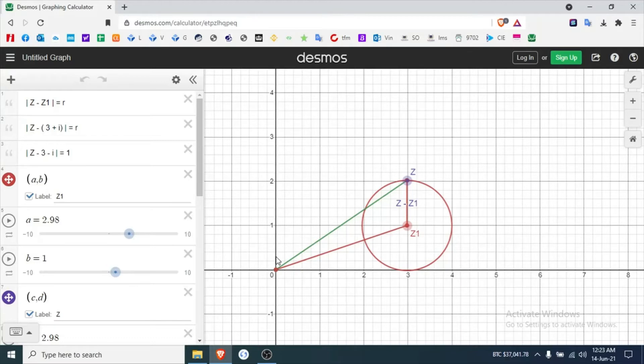But the loci of points that form a circle. So let's dive right in. The form of this loci is the magnitude of z minus z1 equals r. R is the radius.